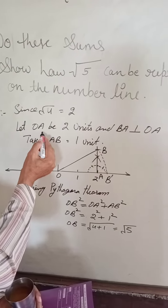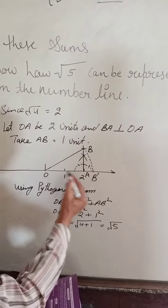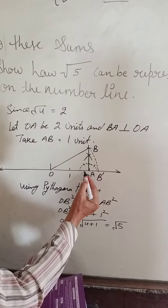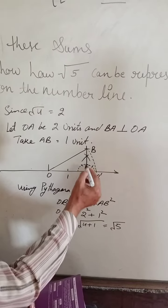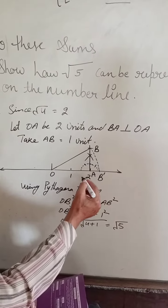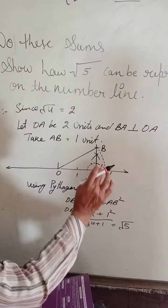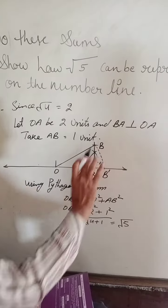Therefore, let us take OA equal to 2 units and let us have BA perpendicular on OA. Take AB equal to 1 unit.